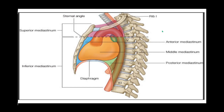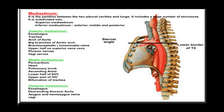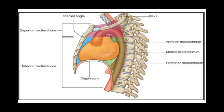Welcome to my channel again, this is Dr. Emmanuel, and today I want us to look at a very quick revision on the divisions of the mediastinum. The mediastinum is a cavity that lies within the two pleura, the two lungs, and includes a large number of structures. Most of the thoracic cavity constitutes the mediastinum — essentially the space that lies between the lungs on both sides.